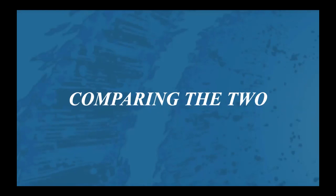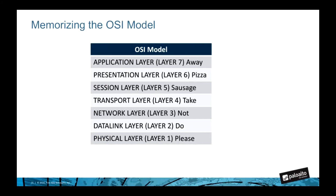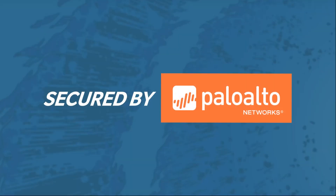Comparing the two models side by side, you can see how they relate to each other — two models that answer the same question. If you're taking an exam for networking certification, you'll need to memorize the seven layers of the OSI model. Here's a mnemonic to remember them from bottom to top: 'Please Do Not Take Sausage Pizza Away.' Thank you for listening and I hope you enjoyed learning about the networking models.